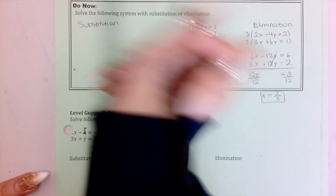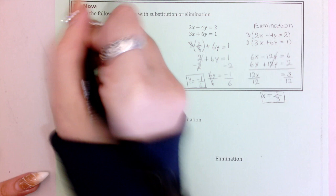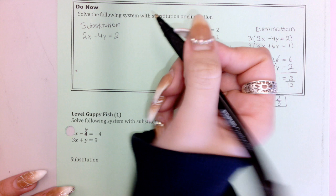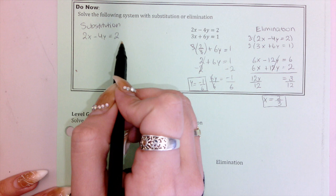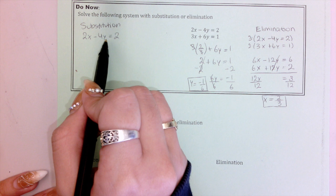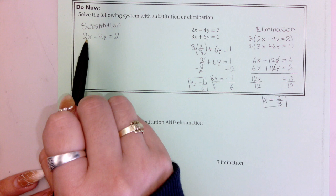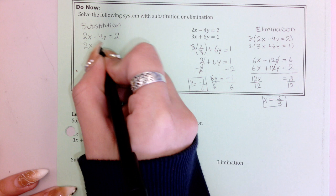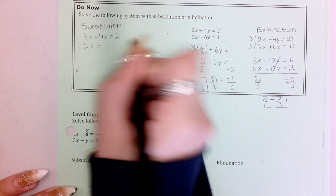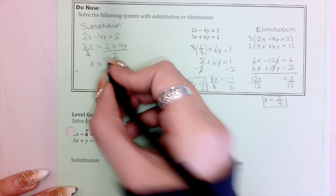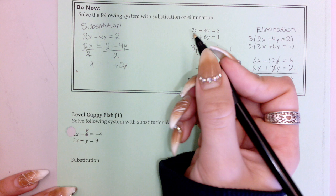Now I'm going to do substitution. I'll pick the first equation because I notice all of the coefficients have a factor of 2. If I divide everything by 2, the x coefficient becomes 1, which makes it nice to solve for x. So solving for x: add 4y to both sides — 2x equals 2 plus 4y. Divide by 2, and x equals 1 plus 2y.